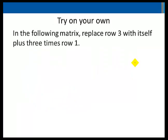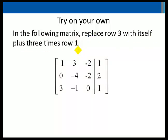Try on your own. In the following matrix replace row 3 with itself plus 3 times row 1. And the matrix is row 1 is 1, 3, negative 2, 1. Row 2 is 0, negative 4, negative 2, 2. And row 3 is 3, negative 1, 0, 1.